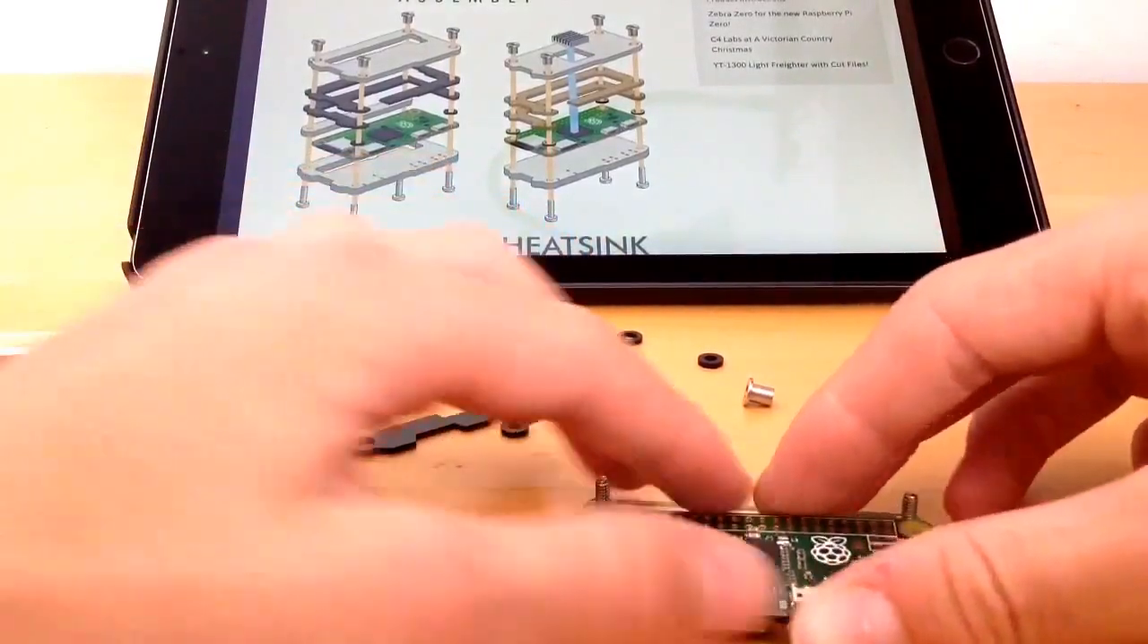This Raspberry Pi doesn't seem to want to go in that easily. There we go. That's the first two kind of layers.